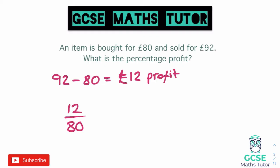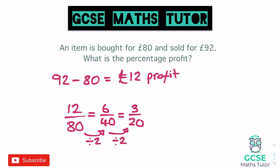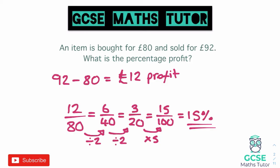Taking the fraction approach, we simplify 12 over 80. Both divide by 2 to give 6 over 40, then divide by 2 again to get 3 over 20. We can't get a denominator of 10, but we can multiply by 5 to get 15 over 100, which is 15%. So using the fraction method, the answer is 15%.